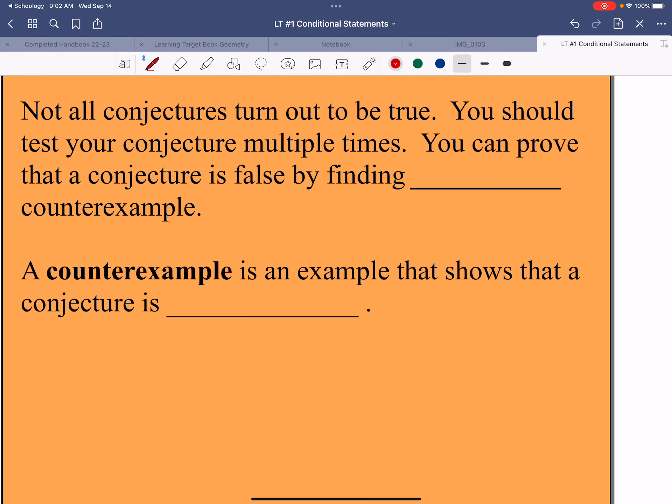Not all conjectures turn out to be true. You should test your conjecture multiple times. You can prove that a conjecture is false by finding just one counterexample. A counterexample is an example that shows that a conjecture is false or incorrect.